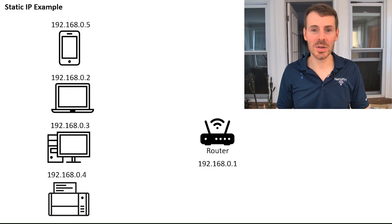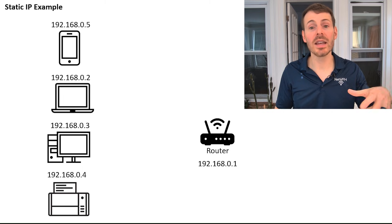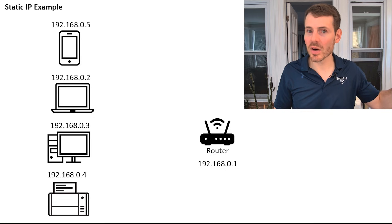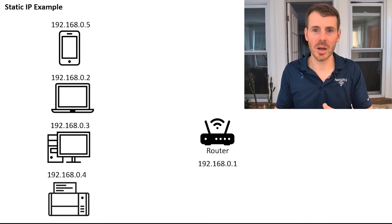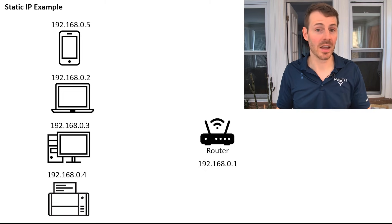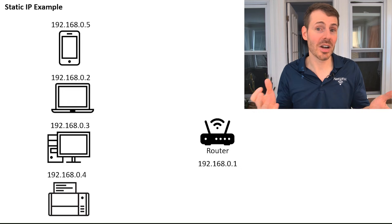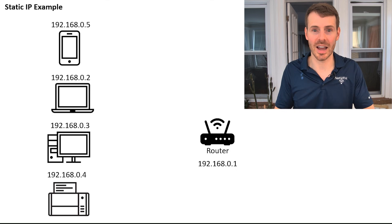Going back to our apartment complex analogy, a static IP address would be like buying an apartment. Let's say you buy apartment number five. If you go and move somewhere else for a year and come back, you will still have apartment number five regardless of whether you're living in the building or not. New people can join and sign a lease, but they won't get apartment five because you bought that one — it's permanently assigned to you.